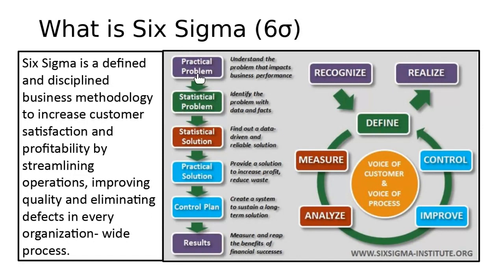Six Sigma usually starts with the practical problem — meaning there is a problem or an issue in a process or organization. This practical problem is converted to a statistical problem using statistical tools like gathering data and statistical analysis. Then the statistical problem is converted to statistical solutions using tools like design of experiments or control charts.